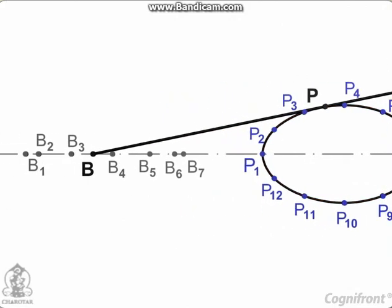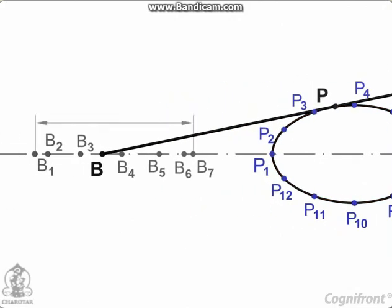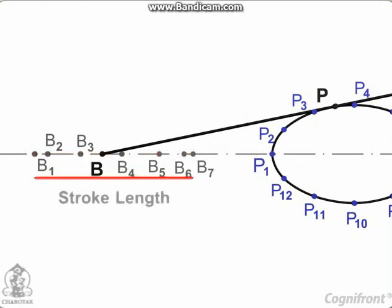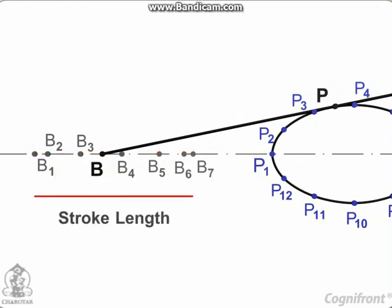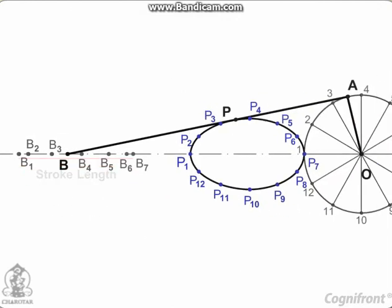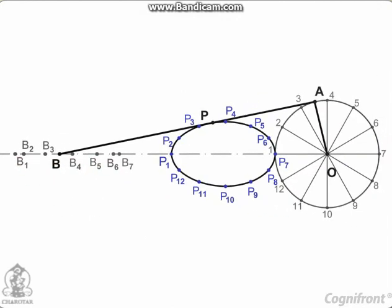Observe that the distance B1 to B7 is the travel of the slider and is equal to twice the length of the crank. This length is known as stroke length. Note the movement of the slider is not uniform with that of the crank end A.